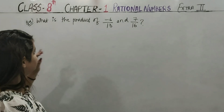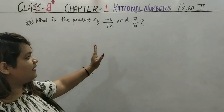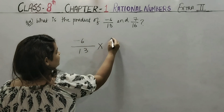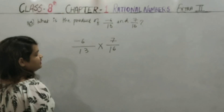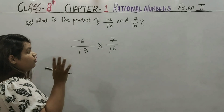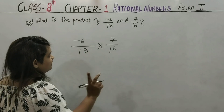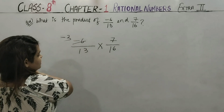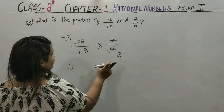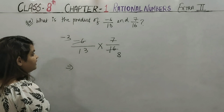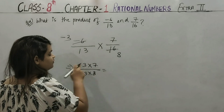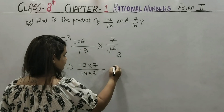Question No. 4 says: write the product of −6/13 and 7/16. Product means multiply: (−6/13) × (7/16). Check for cancellation — 6 and 16 are both divisible by 2, giving 3 and 8. Nothing else cancels: 7, 8, 3, 13 don't cancel further. So multiply straight: (−3 × 7) / (13 × 8). 3×7 = 21, 13×8 = 104. Answer: −21/104.